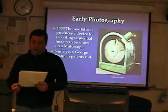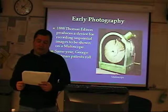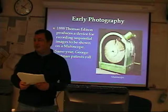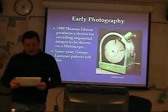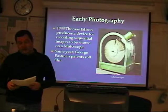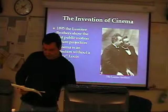In 1888, Thomas Edison produced a device for recording sequential images. The resulting images were then shown on a mutoscope — a device somewhat like an automated flipbook. Mutoscopes were very popular in the penny arcades; there's an old penny arcade in San Francisco where you can still find these today. Also in 1888, George Eastman patented roll film. The combination of these two technologies made the motion picture camera possible.